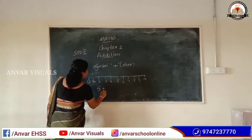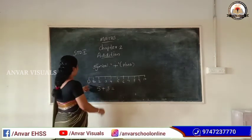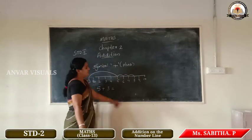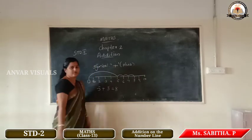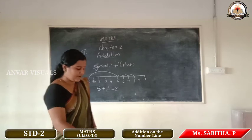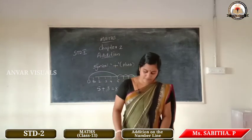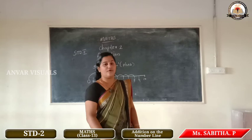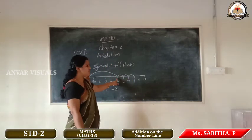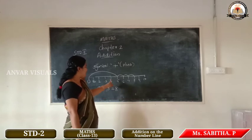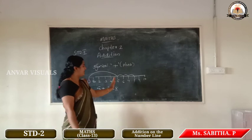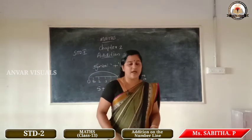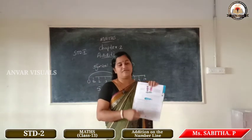Another example: five plus three. Start at five and make three jumps forward — one, two, three — landing on eight. The answer is eight. Addition on the number line is like counting forward: jump to the first number and then count forward the second number. Start at five, add three times — the answer is eight. Now do the activity on page number twenty-five.